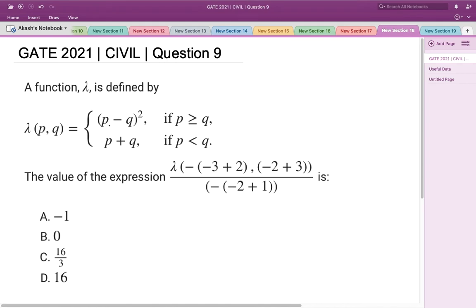Hello everyone, this is the question asked in GATE 2021 Civil Engineering Set 1. A function λ is defined by λ(p,q) equals (p-q)² if p≥q, and p+q if p<q. The value of the expression needs to be found.